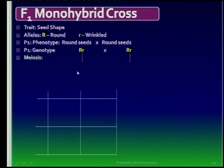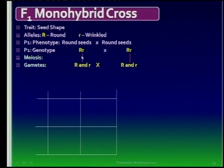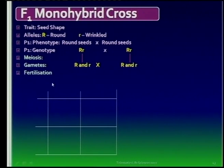The next step is gametes need to be formed, and the process by which they are formed is meiosis. You indicate meiosis merely by making two little down lines and showing your gametes. What does Mendel's law of segregation say? It states that during meiosis and during the formation of gametes, these alleles separate — and you can see that separation. Now fertilization can take place and we use the Punnett diagram.